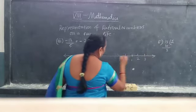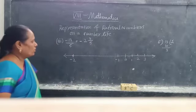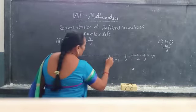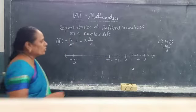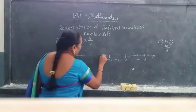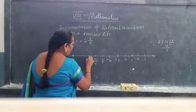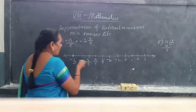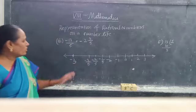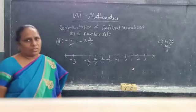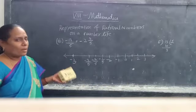No need for the positive side. On the number line, mark minus 1, minus 2, minus 3. Then divide the interval between minus 2 and minus 3 into fifths: minus 2 and 1 by 5, minus 2 and 2 by 5, minus 2 and 3 by 5, and so on — all these are negative values. This is the way to represent rational numbers on the number line. Take some examples and practice.